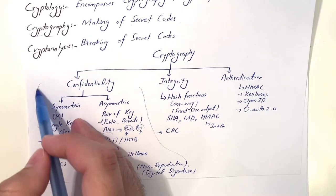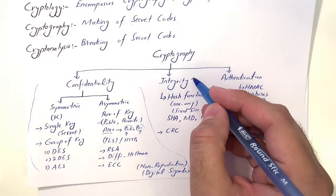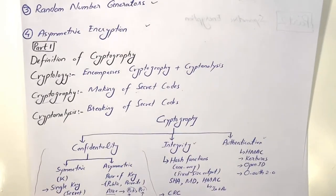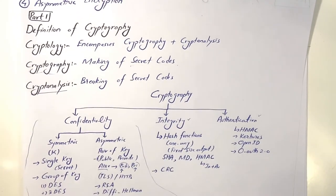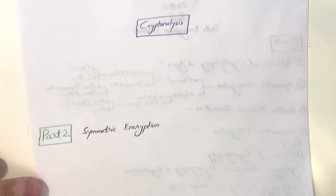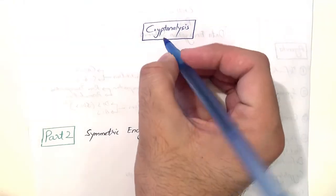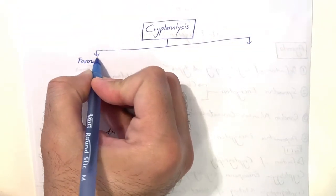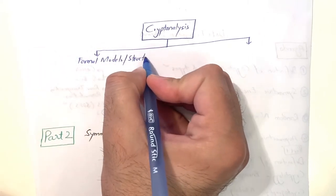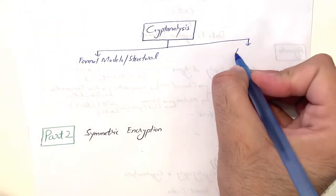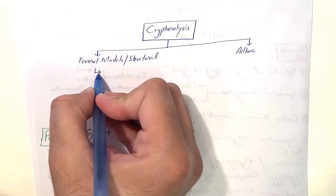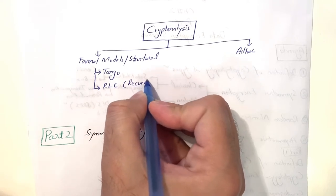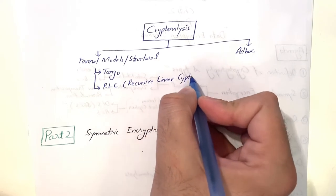In this chapter we will focus on the confidentiality part of cryptography. Integrity and authentication will be covered in the next chapter. Now let's move to the second definition: cryptanalysis. There are mainly two techniques: formal models — also called structural cryptanalysis methods — and ad hoc schemes.